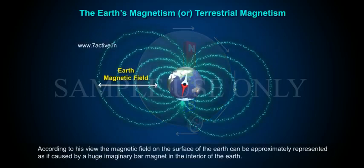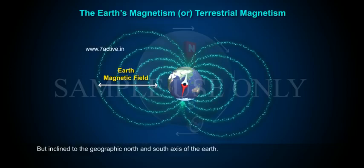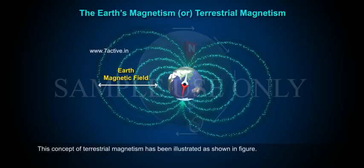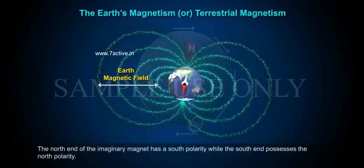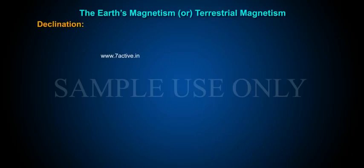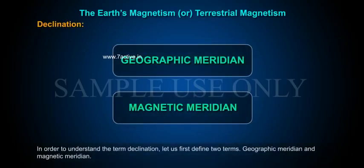According to his view, the magnetic field on the surface of the earth can be approximately represented as if caused by a huge imaginary bar magnet in the interior of the earth, but inclined to the geographic north and south axis of the earth. This concept of terrestrial magnetism is illustrated in the figure. The north end of the imaginary magnet has south polarity, while the south end possesses north polarity.